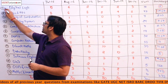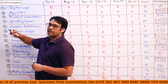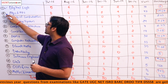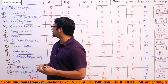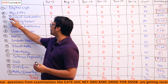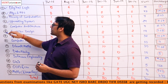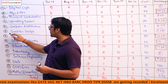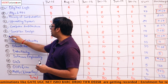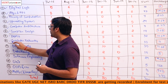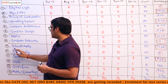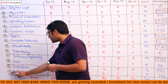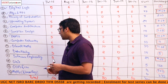The subjects common to both GATE and UGC are: digital logic, algorithms and programming with data structures, theory of computation, operating systems, computer architecture, compiler design, DBMS, computer networks, and discrete mathematics.